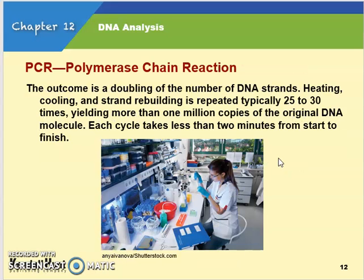The outcome is a doubling of the number of DNA strands. Each time you run PCR, it doubles: one becomes two, then four, eight, sixteen, thirty-two, and so on. Each cycle only takes about two minutes, so in a very short amount of time we can create a large number of copies of a DNA strand we want to study.